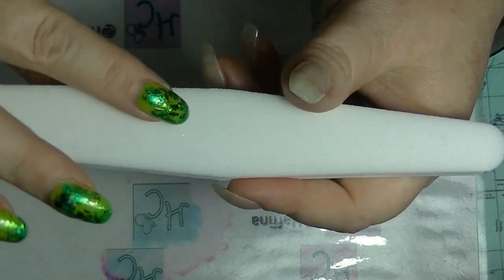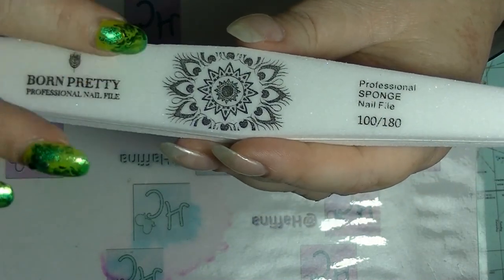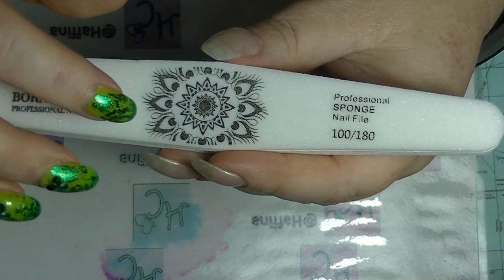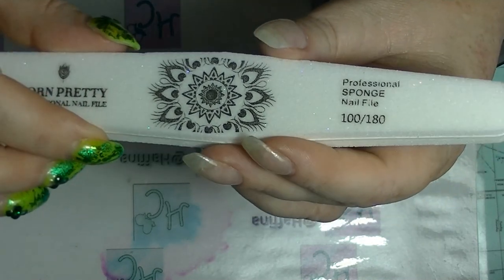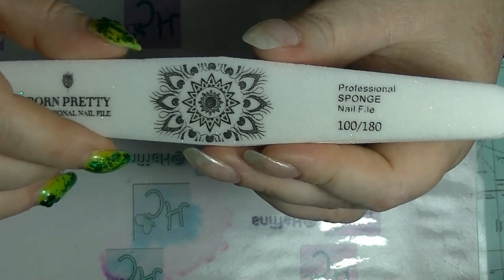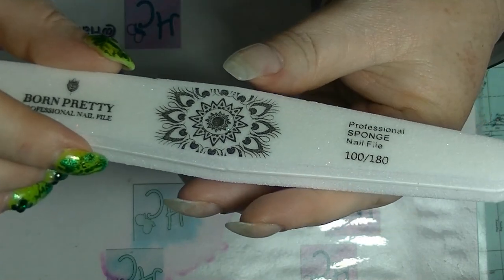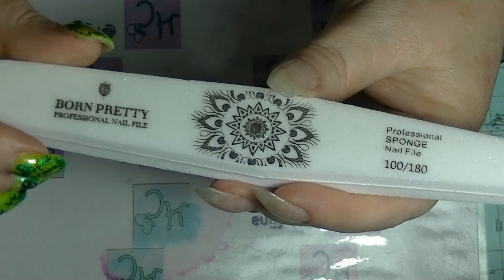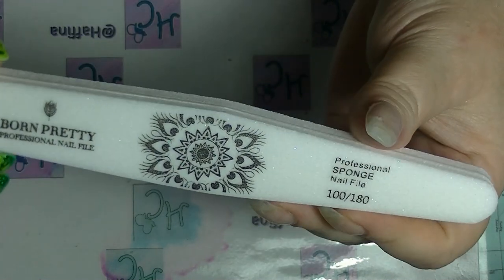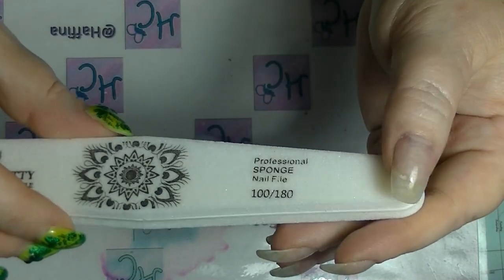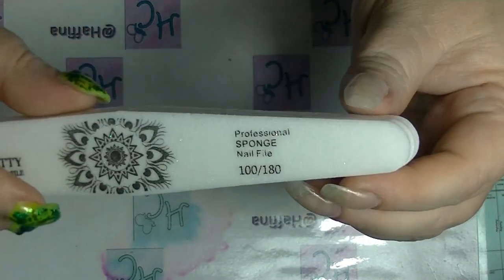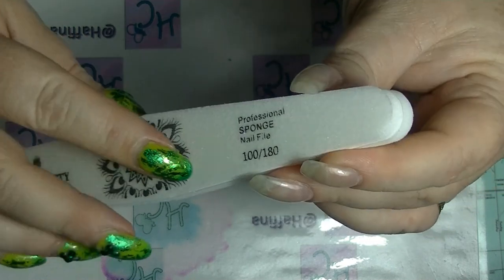I might buff with 180, but I certainly wouldn't try to buff a nail with 100. This would be the grit that I would use to shape a nail or shorten a nail or shape an acrylic nail. It would also be what I would use maybe to take the shine off of the nail before adding an enhancement.